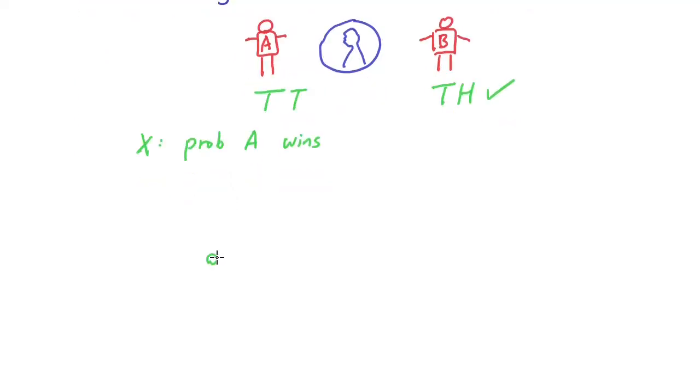We start from player A flipping the coin. There's a chance of probability P that player A is going to win the game. And then there's a probability that player B is going to play the game. For player B to play the game, again player B would have the probability of winning the game. And then if player B doesn't win, now it's back to player A.